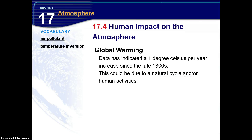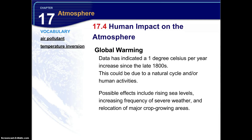Regarding global warming, data indicates a 1 degree Celsius increase per year since the late 1800s. This could be due to natural cycles or human activities. Possible effects include rising sea levels, increasing frequency of severe weather, and relocation of major crop growing areas. Researchers think this increase is primarily due to CO2 levels from the burning of fossil fuels and global deforestation, both of which release CO2. Global deforestation also contributes to higher CO2 levels because burning trees releases CO2, and because trees are no longer present to absorb CO2 through photosynthesis.